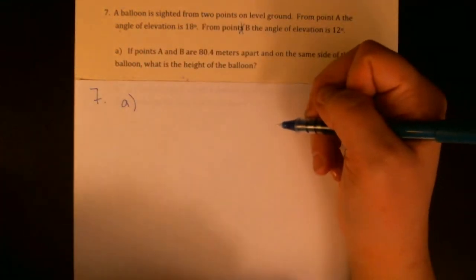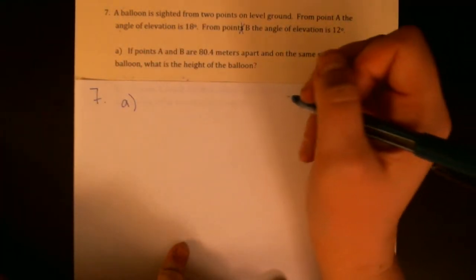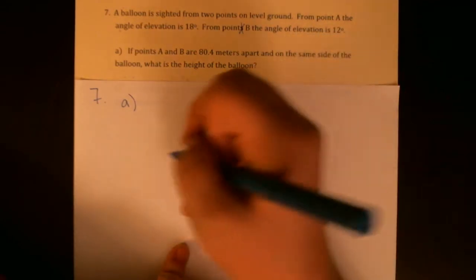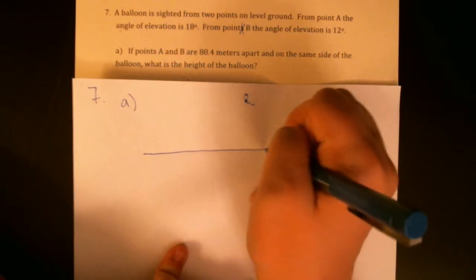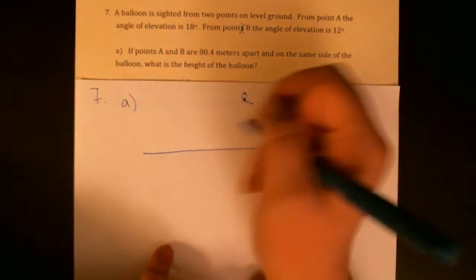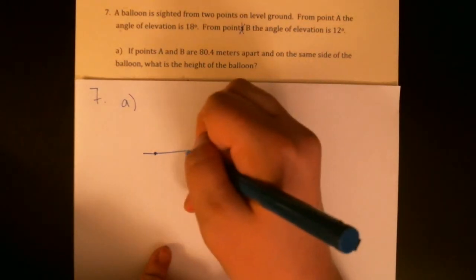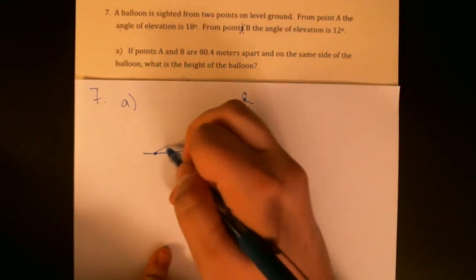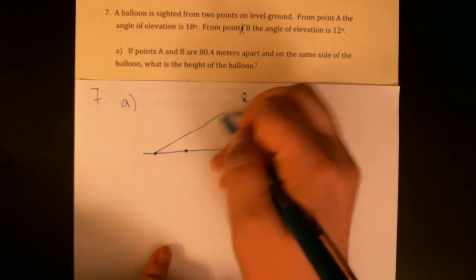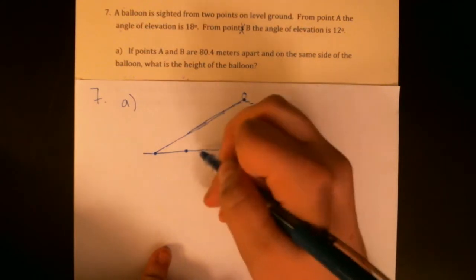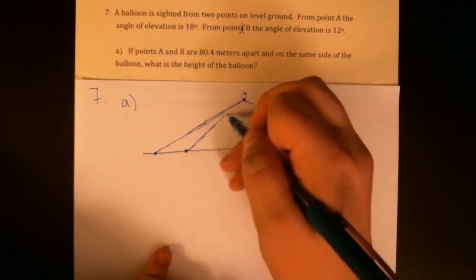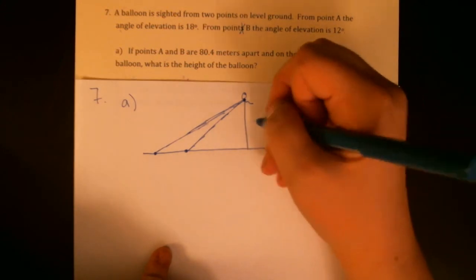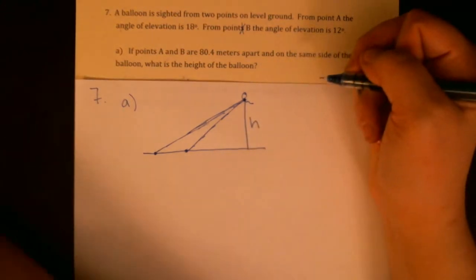So if we're looking at the balloon, okay, so here's my balloon and we have ground level and we have two points in a straight line on the same side of the balloon. From one of the points we look up and see the balloon and get a certain angle of elevation, and from the other point we get a different angle of elevation. We're interested in figuring out how high the balloon is.